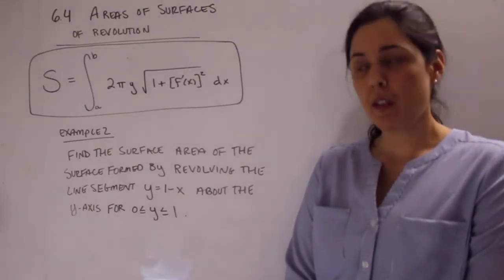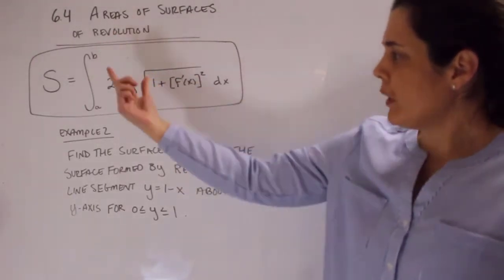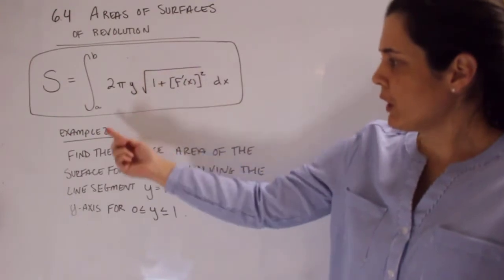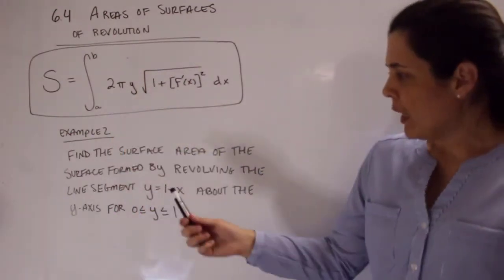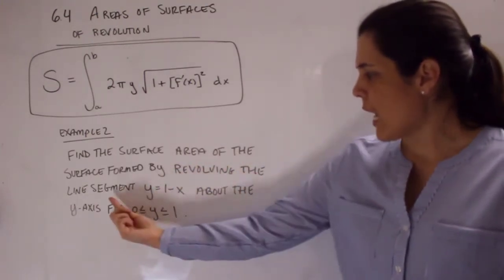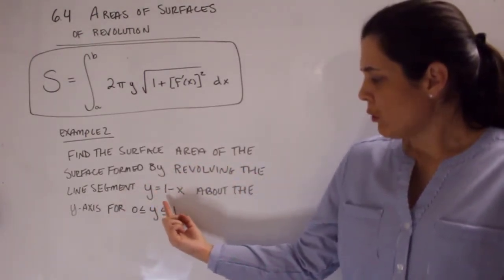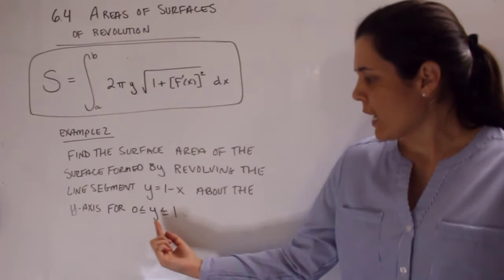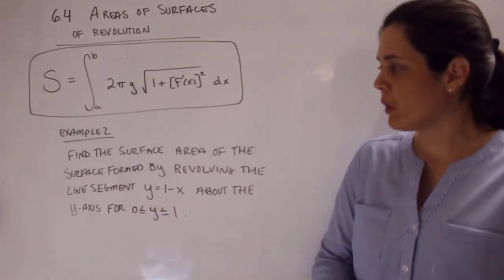Let's go ahead and do example two now. So picking up in our formula for surface area, we're going to just jump right in. So find the surface area of the surface formed by revolving the line segment y equals 1 minus x about the y-axis when y is going from 0 to 1.